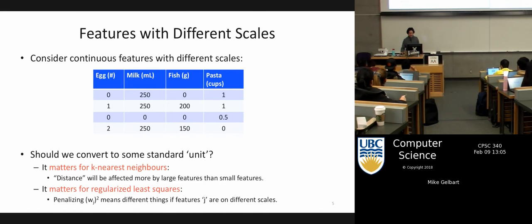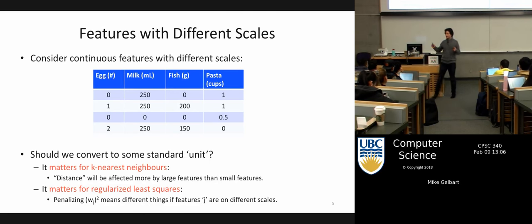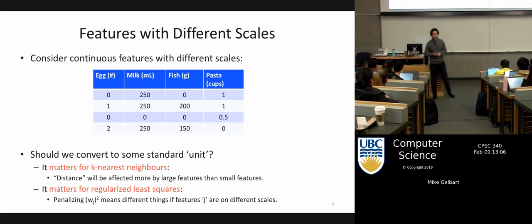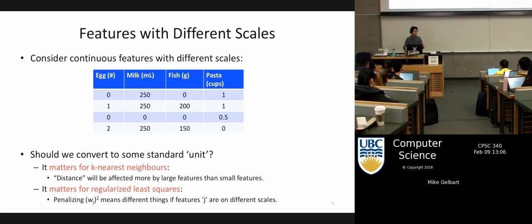It matters for KNN. And once you add regularization to linear regression, the scaling actually matters. Since you're just adding W squared to your objective, if I have something that's really big, then W squared will be really big. The amount of penalty that corresponds to a change in W will be different depending on scale, because all the Ws are being put on equal footing, which doesn't seem right if they're at very different scales.